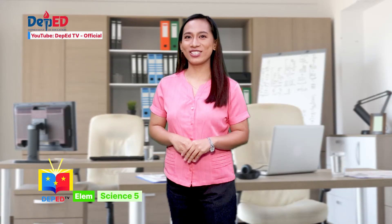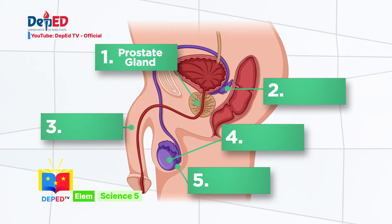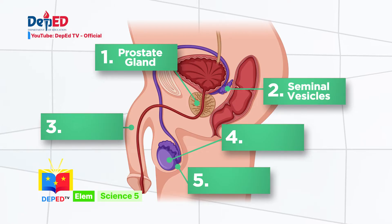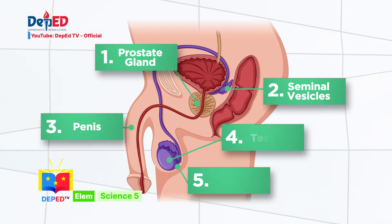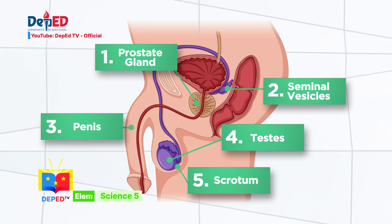Let's check. Number 1: Prostate gland. Number 2: Seminal vesicles. Number 3: The correct answer is penis. Number 4: Testis. Number 5: Scrotum. Well done, 5 stars!